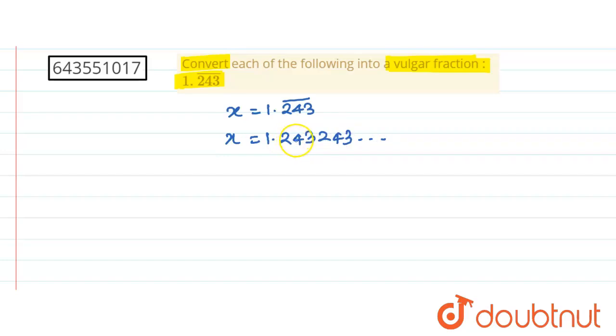Here 3 digits are repeating. So therefore multiply by 1000. Multiply by 1000 on both sides.